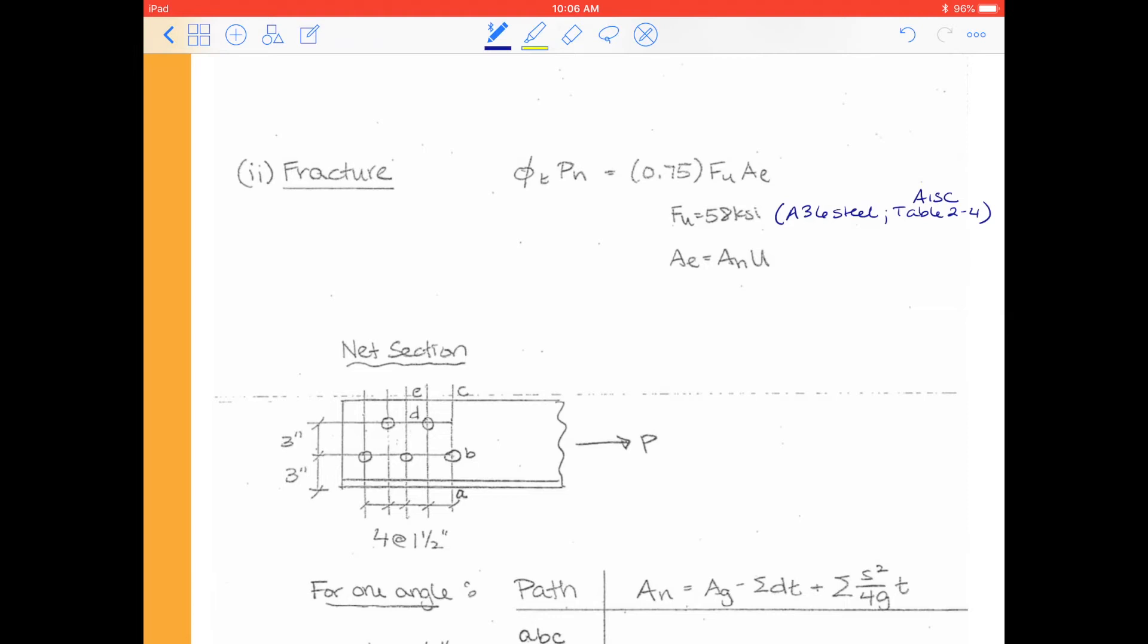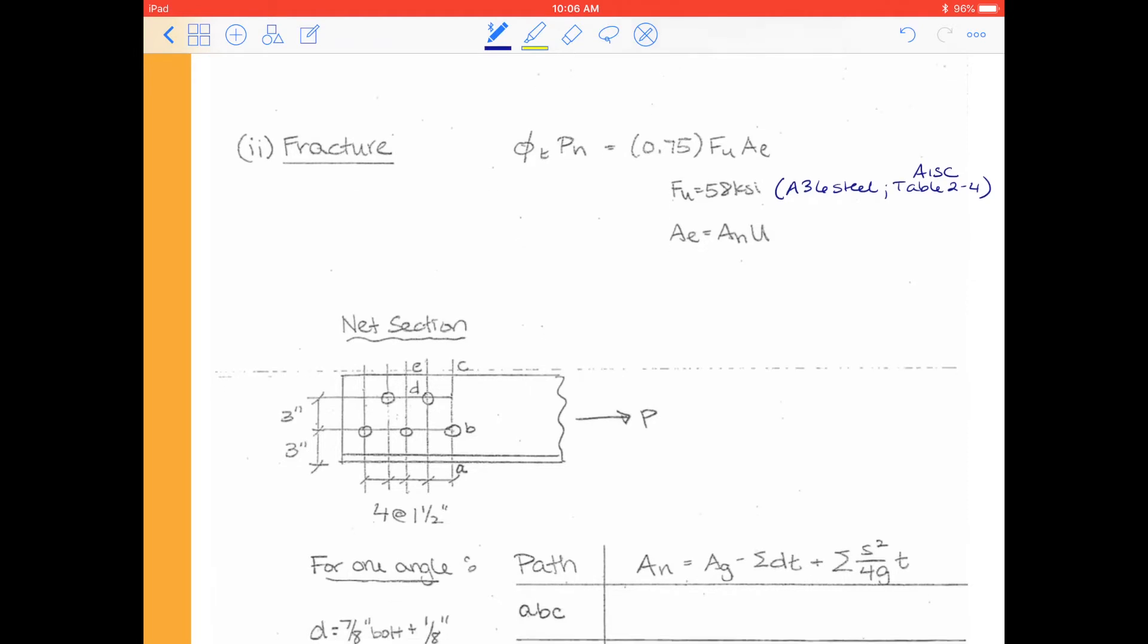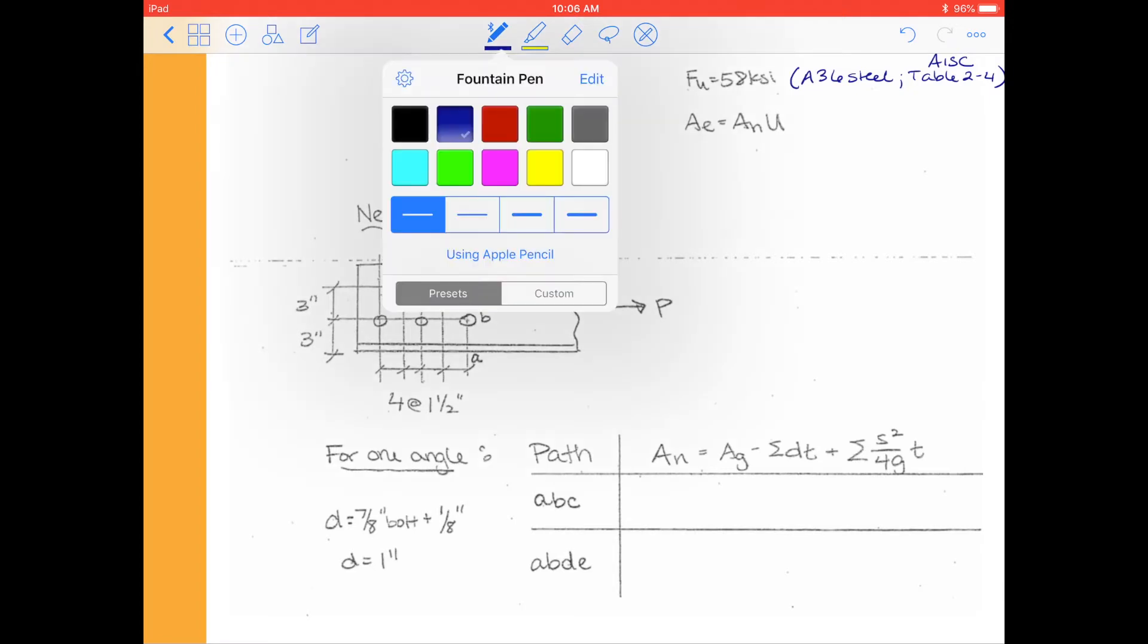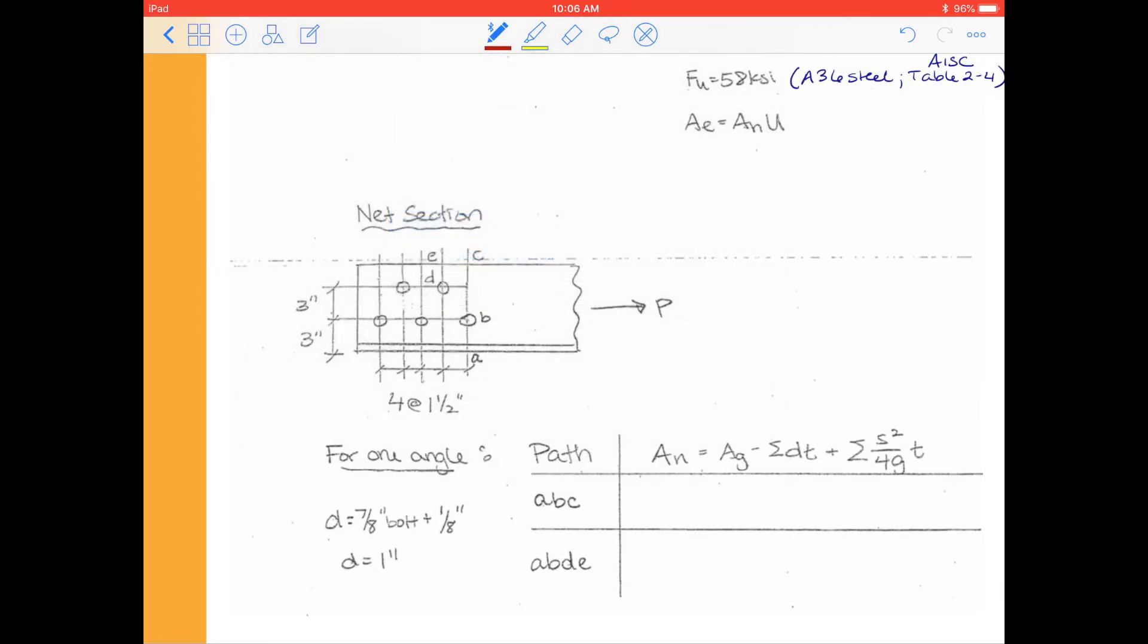Alright, so we want to consider possible net sections for fracture. So here we go. We have our picture of our connection. So we want to consider different net sections. So I would say the first net section to consider is the very forward edge of the connection. So you have to imagine all of this load is in the member. And then when we get to that first line of bolts, we could possibly have a fracture right through the member, all the way across the member. And so that's going to be path ABC. So for one angle, we take An.